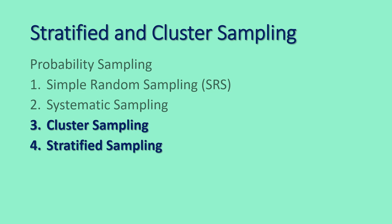Stratified and cluster sampling techniques are just two of the four types of probability sampling. When we say probability sampling, samples are chosen in such a way that each member of the population has a known equal chance of being included in the sample. The other two types of probability sampling are simple random sampling, also known as SRS, and systematic sampling.